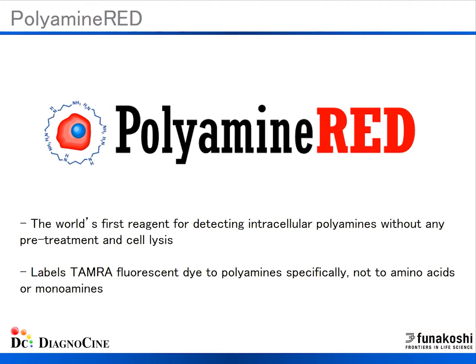Our novel reagent, polyamine red, solves many issues compared to the conventional HPLC method. Polyamine red is the world's first reagent for imaging intracellular polyamines easily without sample pretreatment or cell lysis. Polyamine red specifically targets and labels a TAMRA fluorescent red dye to polyamines, but does not label amino acids, monoamines, or secondary amines.